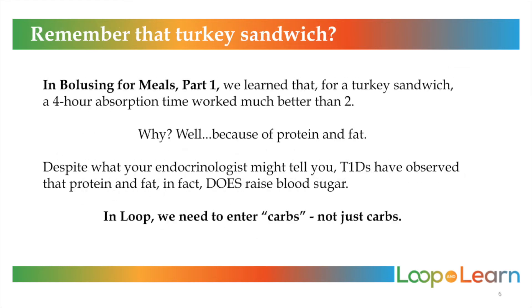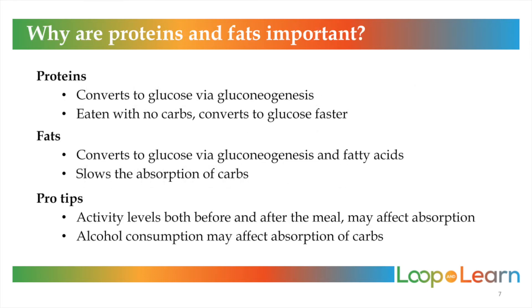Let's think back to presentation one where we used the example of the turkey sandwich. We learned that a four-hour absorption time worked much better than two. That's because of how protein and fat break down. Despite what your endocrinologist and dietician might tell you, type 1 diabetics have observed that protein and fat do raise blood sugar. This is why in Loop we enter 'carbs' in quotes and not just carbohydrates. Protein converts to glucose slowly via gluconeogenesis, and when protein is eaten with no carbs, it actually converts to glucose even faster. Fats convert to glucose via gluconeogenesis and fatty acids. When fat is ingested with carbs, it slows the absorption of those carbs. Activity level and alcohol consumption may also have an effect, but we're only focusing on protein and fat right now.